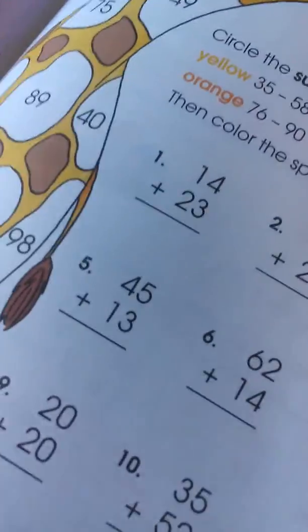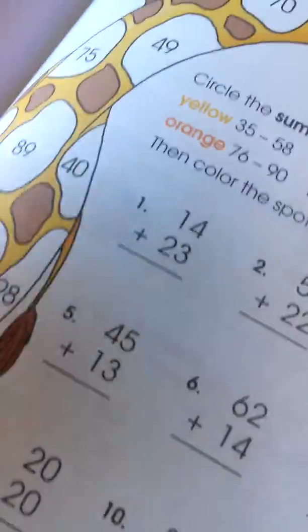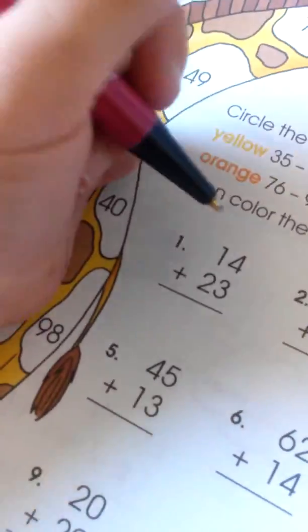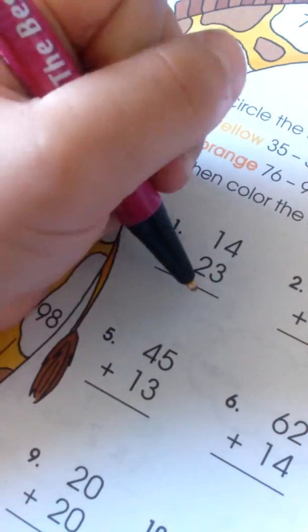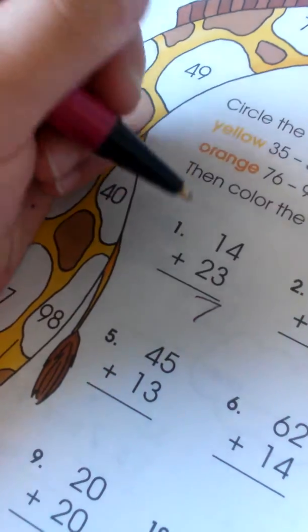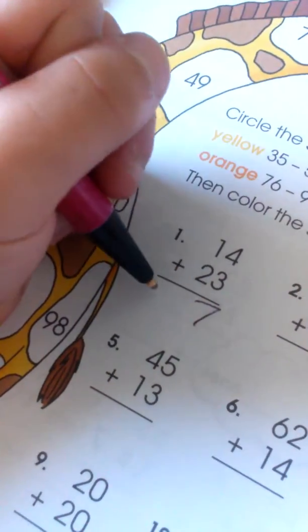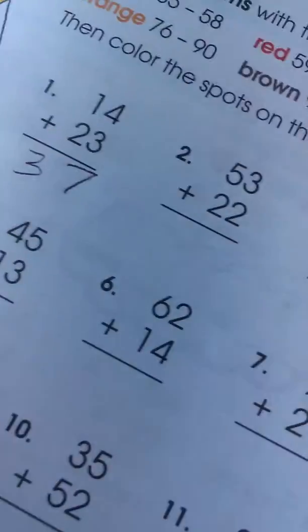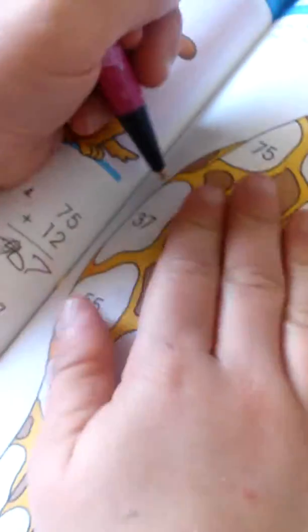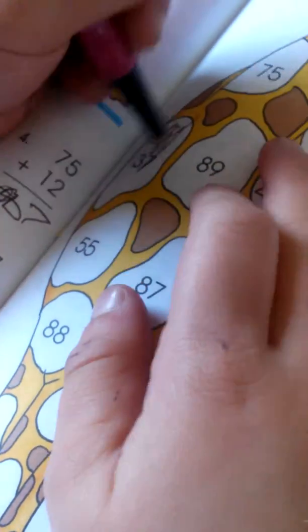So 14 plus 23. 4 plus 3 is 7, so that goes there and then 1 plus 2 is 3 and that's the answer. So we need to look for 37 over here and I see it, so I need to color it.